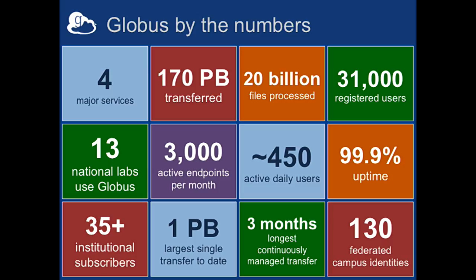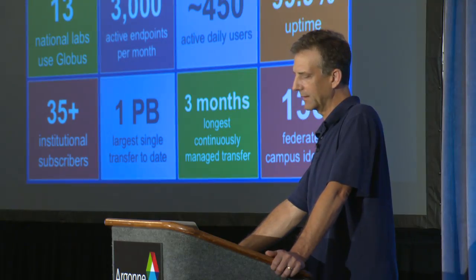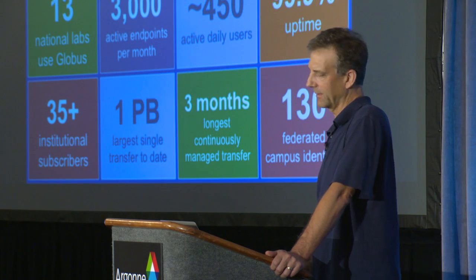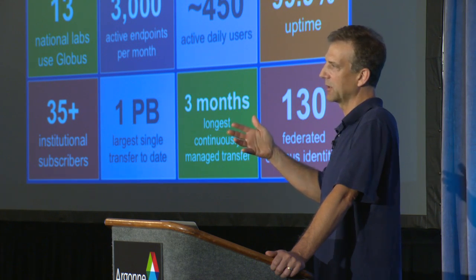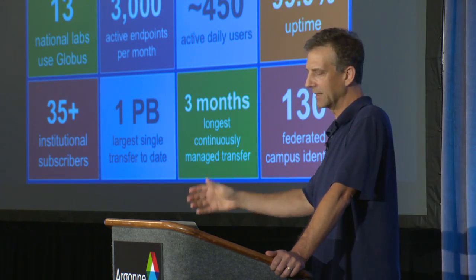Here's Globus by the numbers. We've got thousands of registered users, transferred lots of data and files, national labs have running endpoints, and there are thousands of endpoints when you think about laptops and all the various places people need to move data. We have 3,000 active endpoints per month, 450 daily users that are quite diverse, and over a month about 1,000 unique users - over two to three months, 3,000. People don't need to move data every day all the time - some just need to plug in once in a while, so it's nice that a system like this is there when they have large data to move.